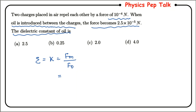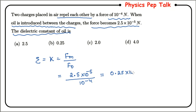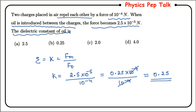The force in the given medium is 2.5 into 10 to the power of minus 5, and the force in air is 10 to the power of minus 4. So K equals 10 to the power of minus 4 divided by 2.5 into 10 to the power of minus 5, which gives 0.25 into 10 to the power of minus 4 divided by 10 to the power of minus 4. The 10 to the power of minus 4 terms cancel, giving K equals 4. Therefore option B is the correct answer.